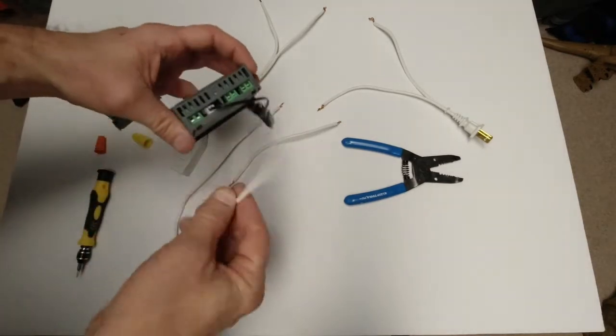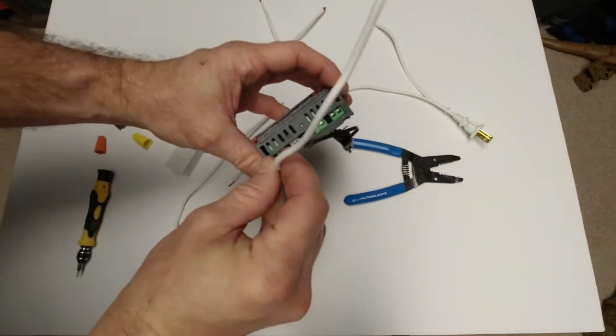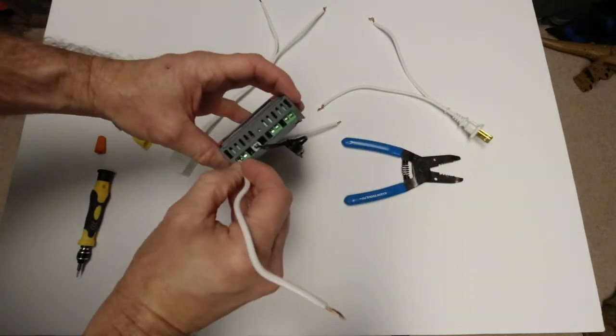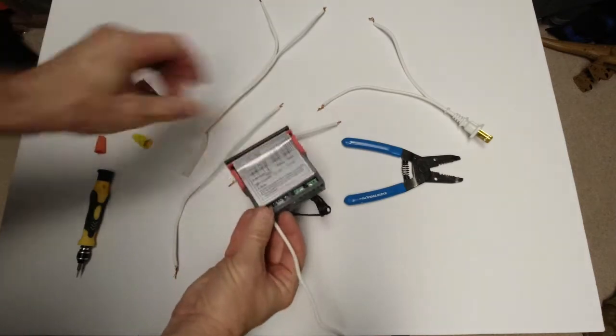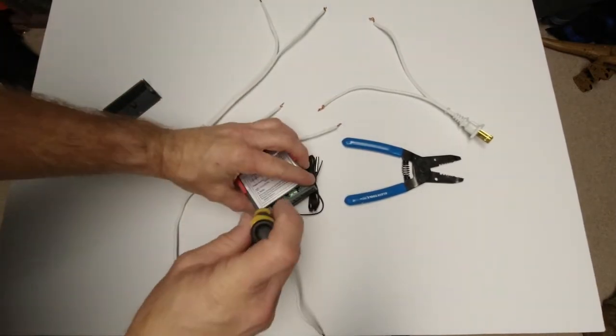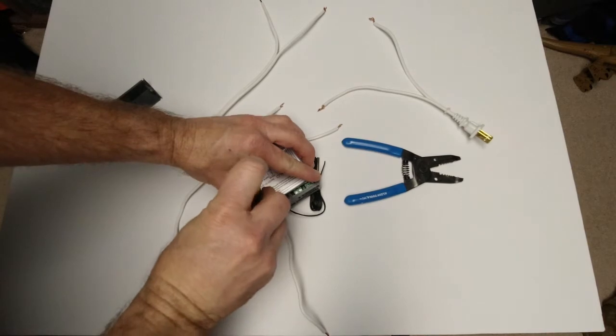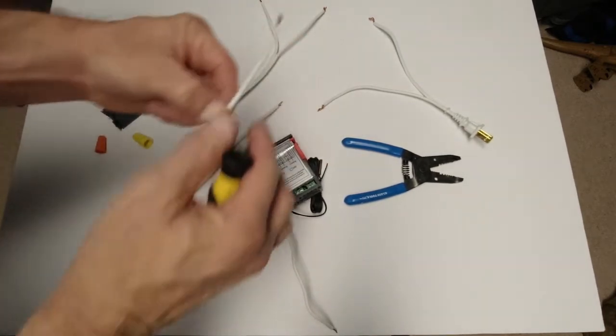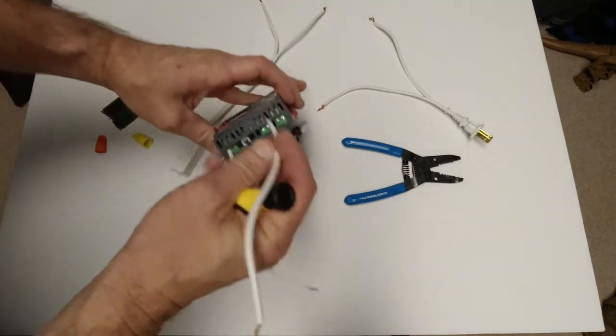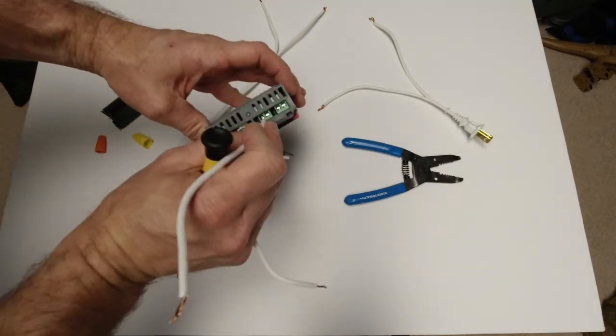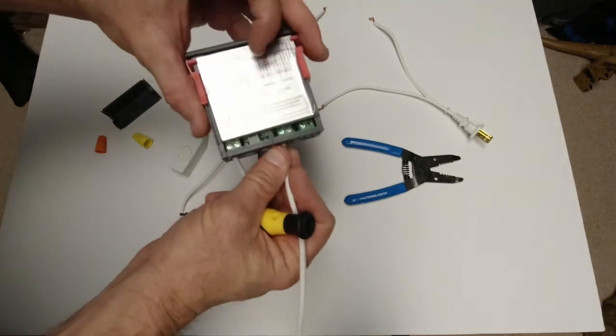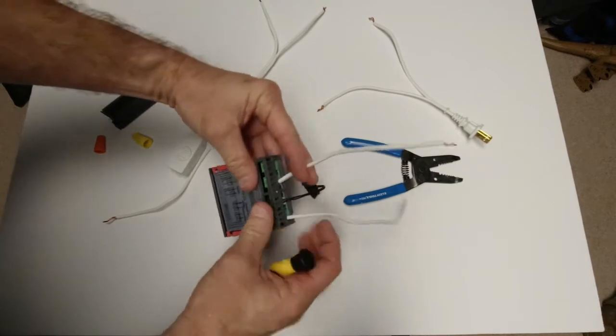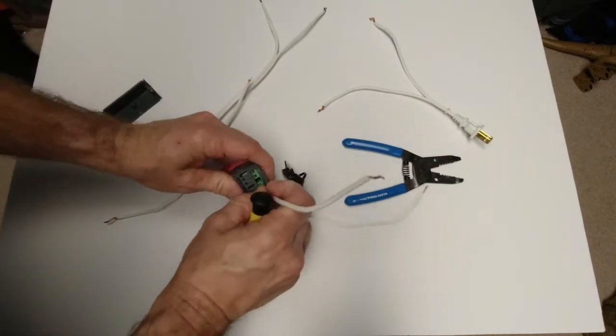I'm gonna take one of the small wires, I'm gonna stick it into the first port, port one. I'm gonna tighten it down. I'm gonna take the second small one, put it into port five. Make sure it's in there good, tighten it down.